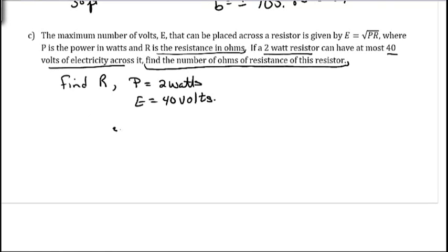So, we know that E is equal to 40. So, we're going to replace the E in this equation with 40. So, 40 equals the square root of P times R. And we know that P is 2. So, that would be 2R. So, to undo a square root, we want to square both sides of our equation. And 40 squared gives us 1,600. And that's equal to 2R.